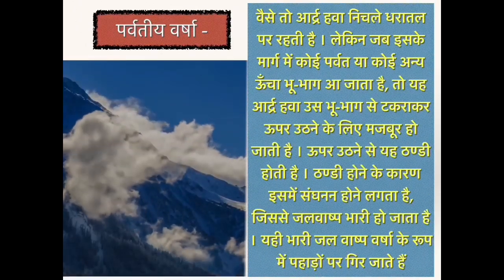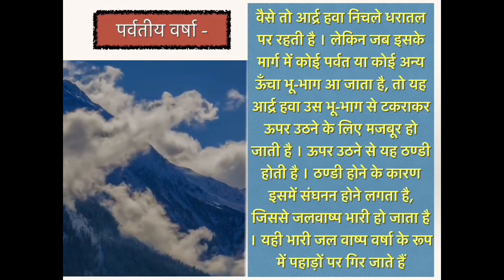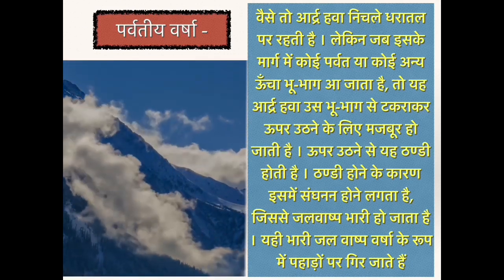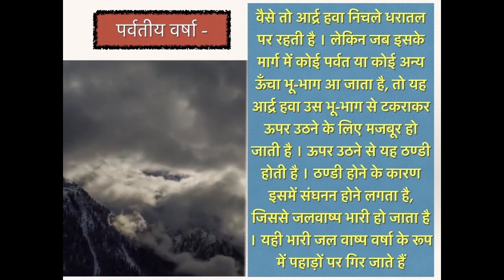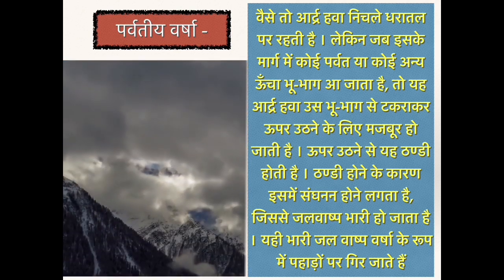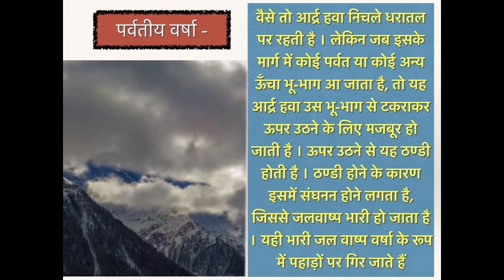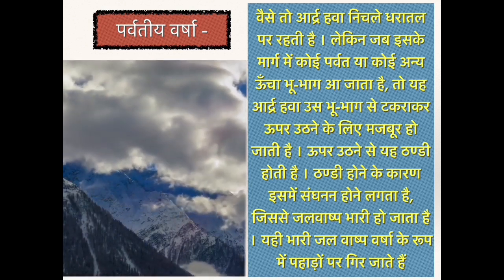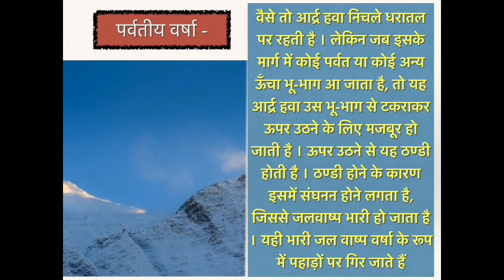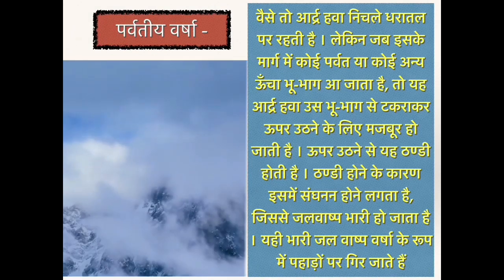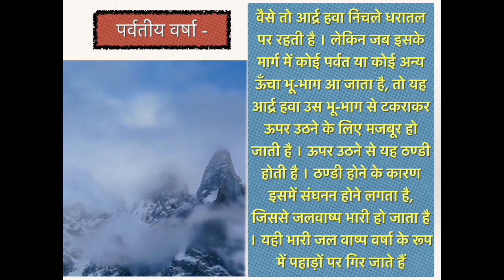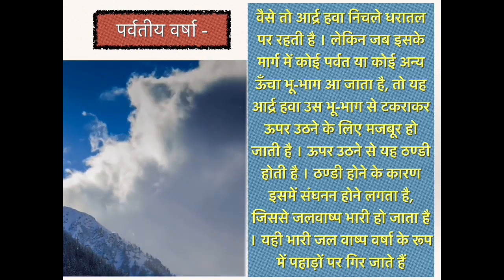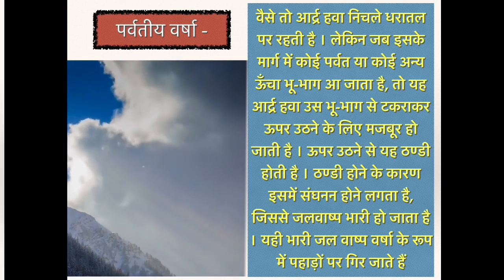वैसे तो आर्द्र हवा निचले धरातल पर रहती है। लेकिन जब इसके मार्ग में कोई पर्वत या कोई अन्य ऊंचा भू-भाग आ जाता है, तो यह आर्द्र हवा उस भू-भाग से टकरा कर ऊपर उठने के लिए मजबूर हो जाती है। ऊपर उठने से यह ठंडी होती है। ठंडी होने के कारण इसमें संघनन होने लगता है। जिससे जलवाष्प भारी हो जाता है। यही भारी जलवाष्प वर्षा के रूप में पहाड़ों पर गिर जाते हैं।